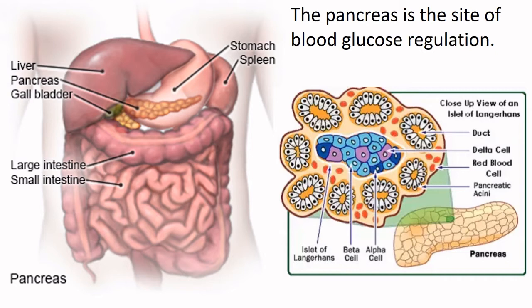Inside the pancreas there are areas called the islets of Langerhans. These contain beta cells — beta cells produce and secrete insulin. There are also things called alpha cells, which produce a hormone called glucagon.